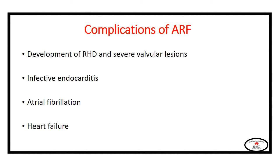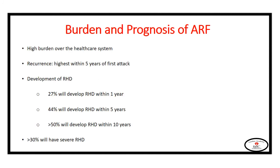The complications of acute rheumatic fever include the development of rheumatic heart disease and severe valvular lesions, infective endocarditis, atrial fibrillation, and heart failure. Acute rheumatic fever exerts a high burden over the healthcare system. It is a highly recurrent disease, with the highest recurrence occurring within five years of the first attack. With recurrent attacks of rheumatic carditis, patients develop rheumatic heart disease — the incidence is 27 percent within one year, 44 percent within five years, and more than half of patients develop it within 10 years. More than 30 percent of patients with rheumatic heart disease will have severe disease requiring medication and intervention.